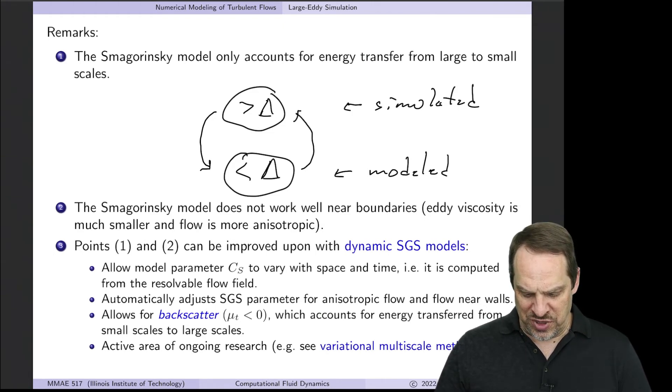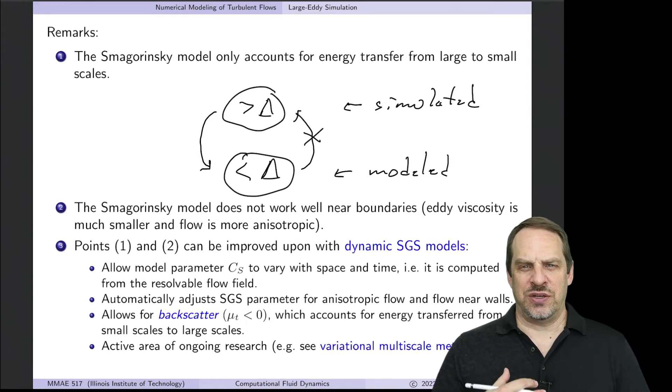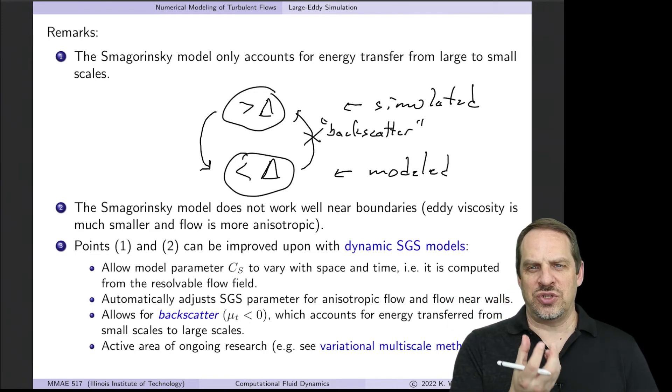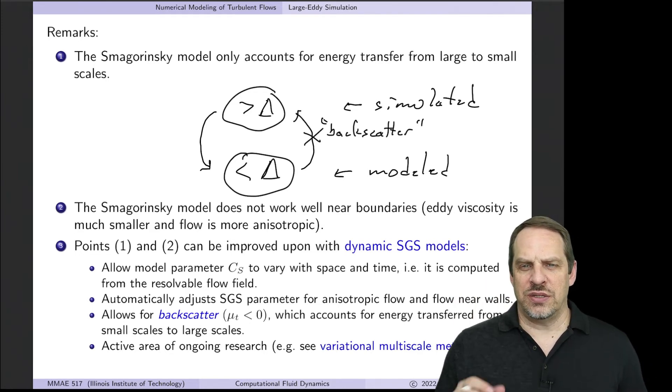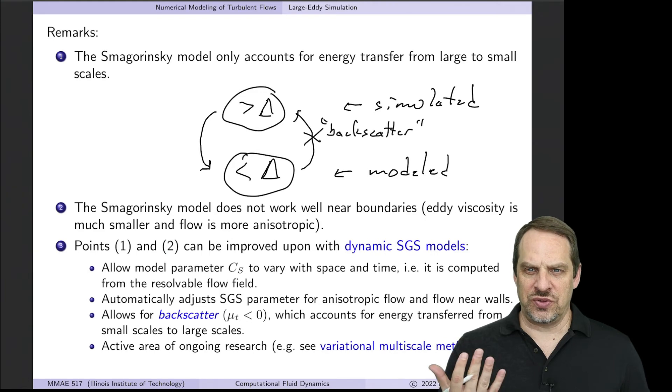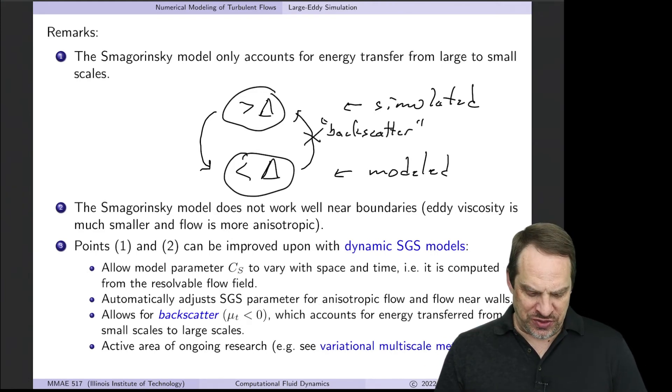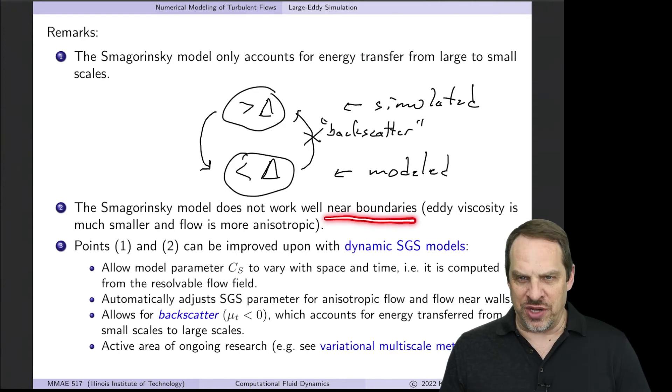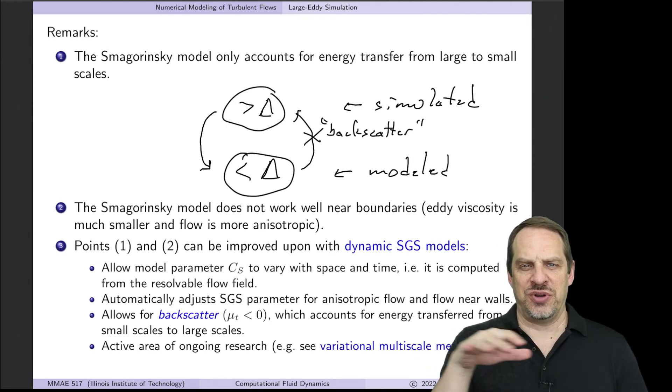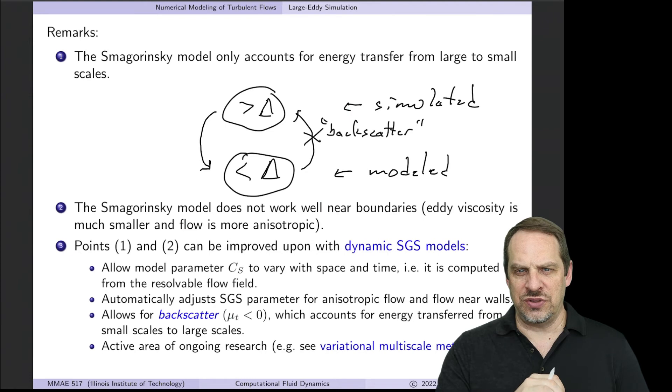But it does not allow information transfer back from small scales to large scales—this is called backscatter. In some flows that's not a terrible simplification, but in others there is significant backscatter. The most problems with Smagorinsky occur near solid boundaries where eddy viscosity is much smaller and flow is more anisotropic, behaving differently in different directions.